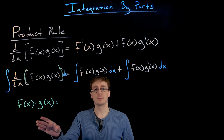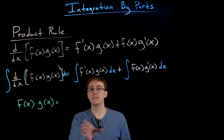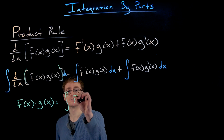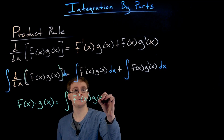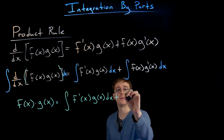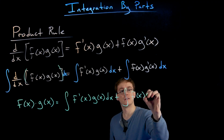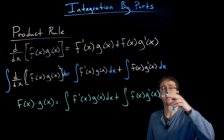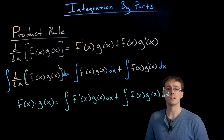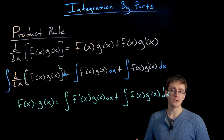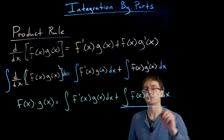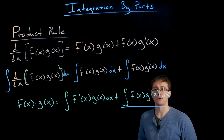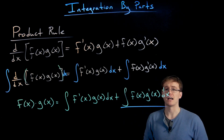The left hand side of our formula simplifies to just f times g. The right hand side we leave as two separate integrals: the integral of f prime times g, and the integral of f times g prime. To put this into the more standard form we isolate the integral of f times g prime by subtracting the integral of f prime times g from each side of our equation.